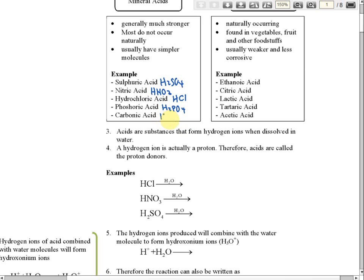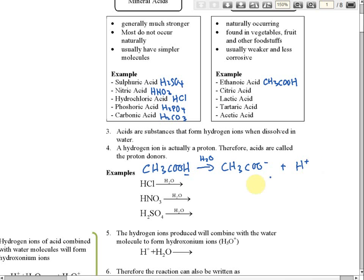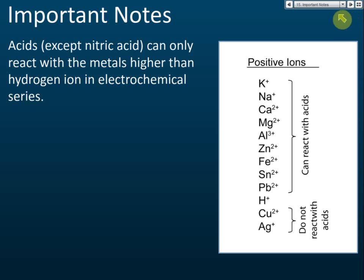Carbonic acid is H₂CO₃. For organic acids, you only need to know ethanoic acid: CH₃COOH. When dissolved in water, it forms CH₃COO⁻, meaning only the hydrogen dissociates from the molecule, producing hydrogen ions. This is called the ethanoate ion.